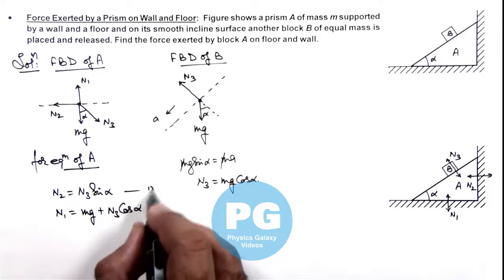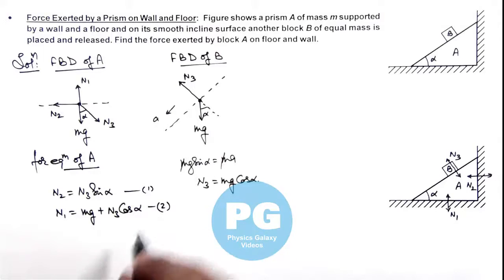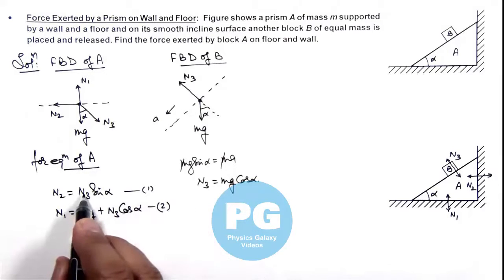Now say if this is our equation 1 and this is our equation 2, then directly we can write from equation 1: N2 is N3 sine alpha. If we substitute the value of N3, so this will give us the value of N2.